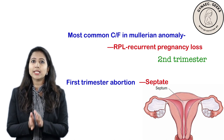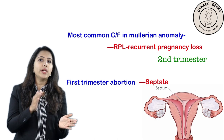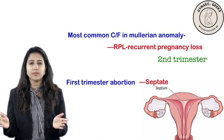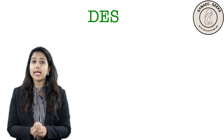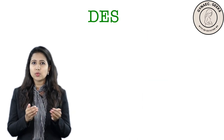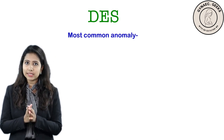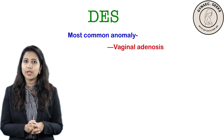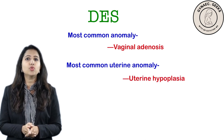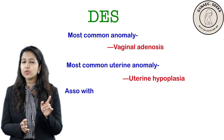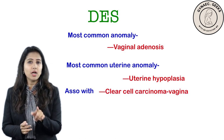If a patient with an anomaly has a first trimester abortion, it is more likely due to septate uterus. Regarding diethylstilbestrol: it was banned in 1971, which is why DES-related anomalies are decreasing. The most common anomaly seen is vaginal adenosis, and the most common uterine anomaly is uterine hypoplasia.